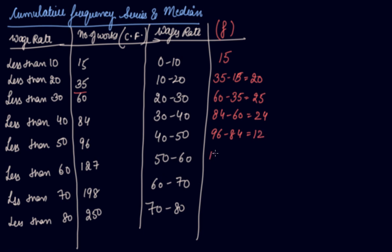50 to 60 is 127 minus 96, which is 31. Then 198 minus 127, which is equal to 71. Then 250 minus 198, which is equal to 52.